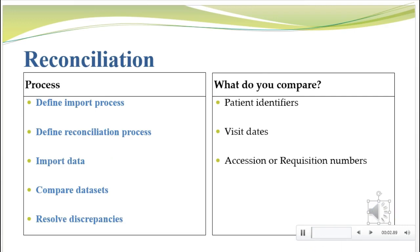So how do you do a reconciliation? First let's look at the process. Some of the PowerPoints posted give really good detailed examples, but for an overview: you have to define the import process first. You have to agree with the central lab on what the data they're sending looks like — how often you'll get it, what the data fields look like, and what they'll be named. You also have to define the reconciliation process up front. You can't wait and write it down at the end after you've done it.